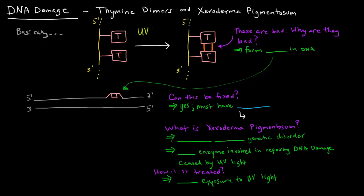you go out in the sun, you play out in the sun, there is UV light that can cause what is called dimerization of these thymine nucleotides.